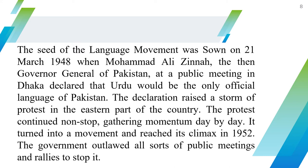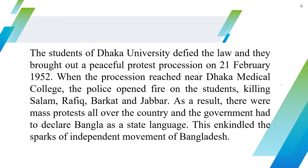The government outlawed all sorts of public meetings and rallies to stop it. But the students of Dhaka University defied the law and they brought out a peaceful protest procession on 21st February 1952.